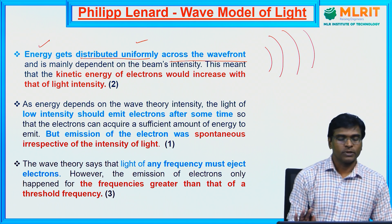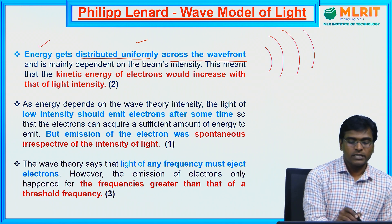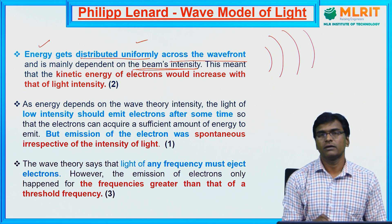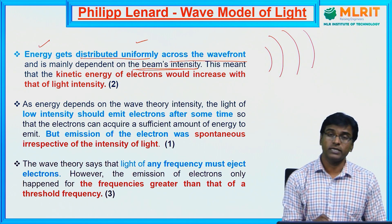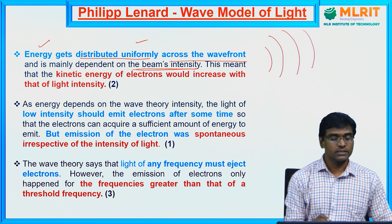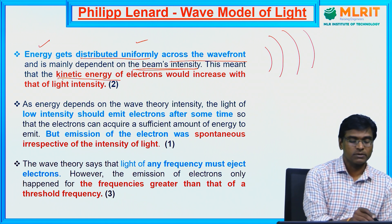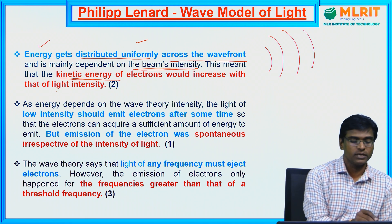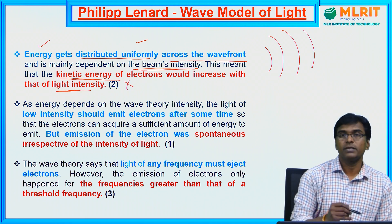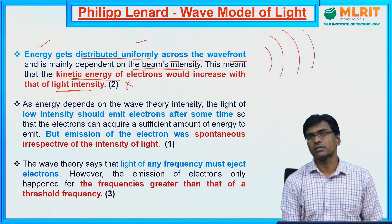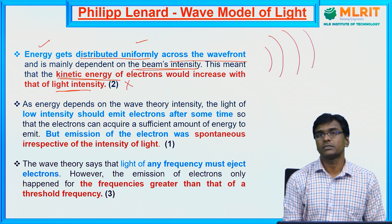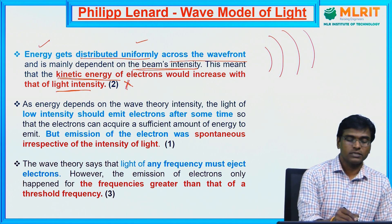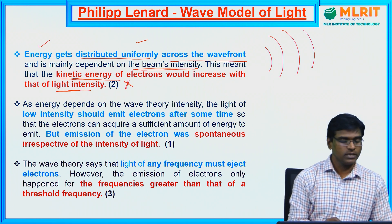This means that energy is directly proportional to the intensity of the light. Therefore, the kinetic energy of the emitted electrons must depend on intensity. But this is not what happens in the photoelectric effect — the kinetic energy of the emitted electrons depends on the frequency of the incident light, not the intensity. So the classical wave theory could not explain this.